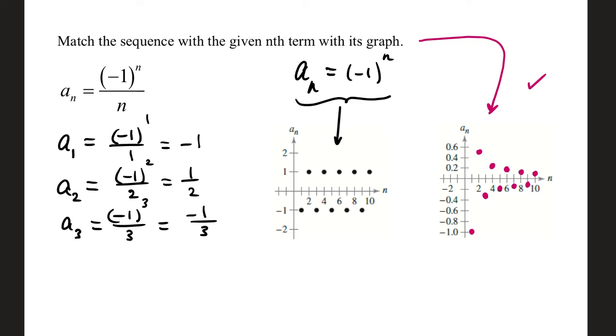In the second example, we have a sign alternating term, negative 1 to the n. If n is odd, negative 1 to an odd power is negative 1. If n is even, negative 1 to an even power is positive. So this is going to alternate positive and negative depending on the value of n. When n is 1, negative 1 to the first over 1, that's negative 1.